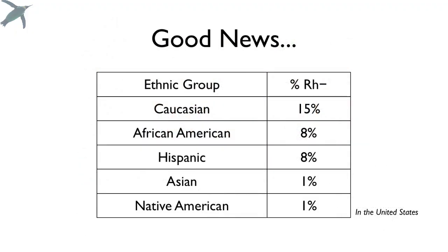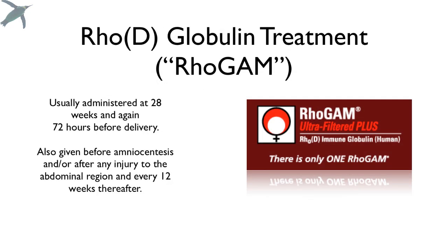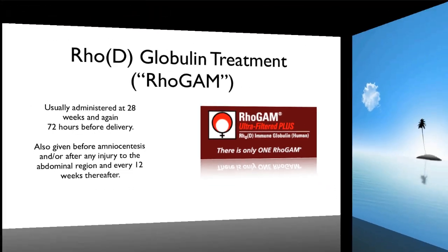There's good news. The percent of individuals on the planet who are RH negative is relatively small — these are data from the U.S. but it's similar around the world. There's even more good news: there is a treatment called RhoGAM. You can see here when it is administered — this will actually bind up and block the mother's antibodies and prevent them from binding to the blood cells of the fetus. So that's really good news.